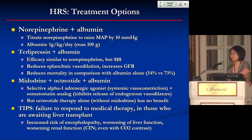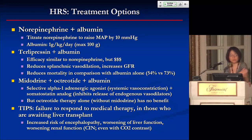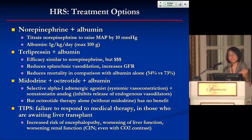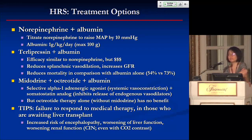For treatment options — in the critically ill, we typically utilize a norepinephrine drip in addition to albumin. We titrate norepinephrine starting at 0.5 mg per hour up to 3 mg per hour to raise the mean arterial pressure by 10 mmHg. We give albumin to the same degree as for volume expansion. Occasionally, we'll also add vasopressin starting at 0.01 units per hour and titrating up to provide systemic vasoconstriction and reduce splanchnic vasodilation.